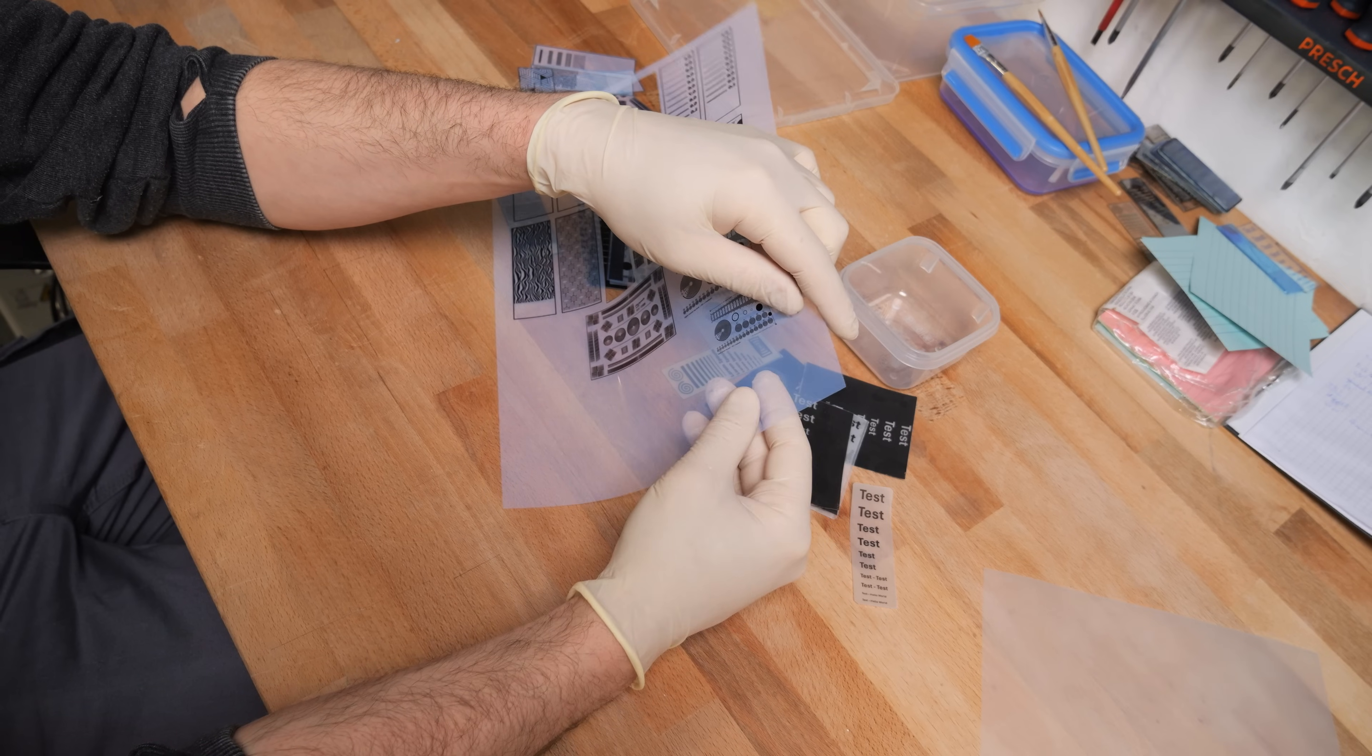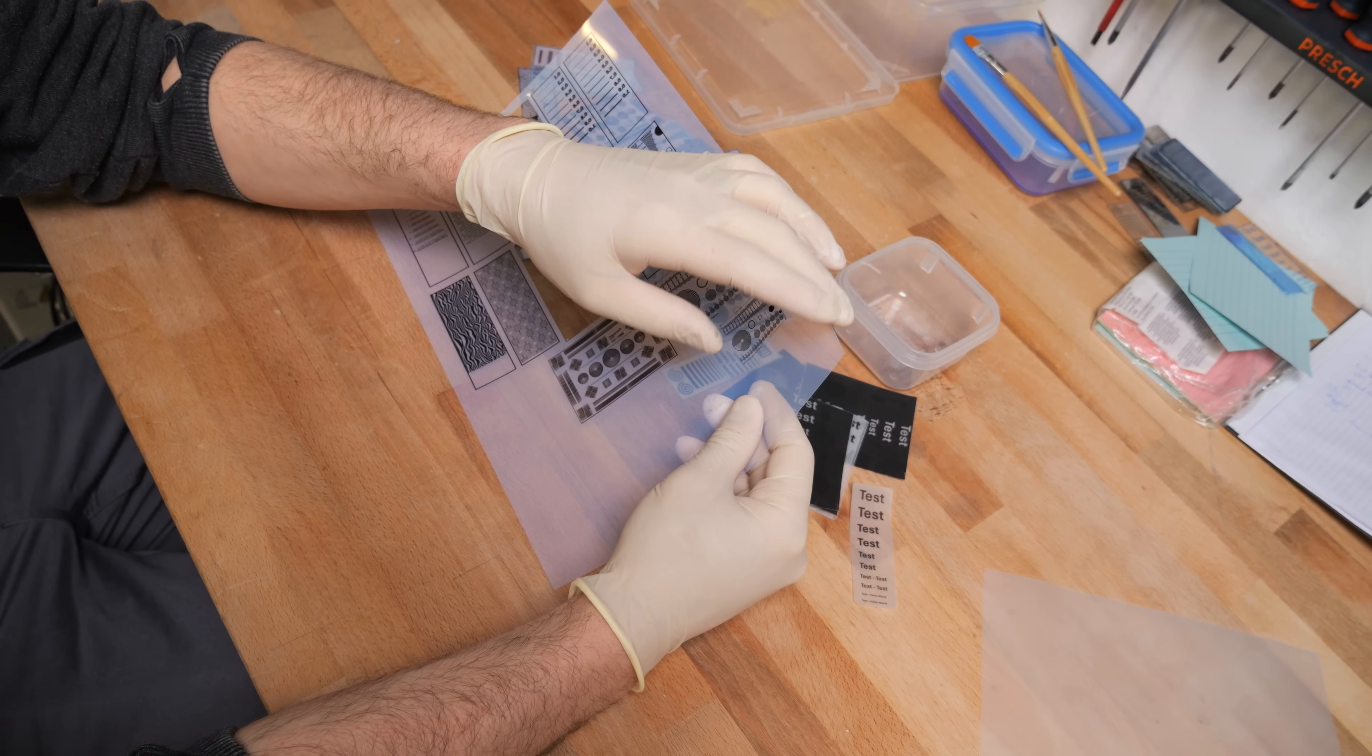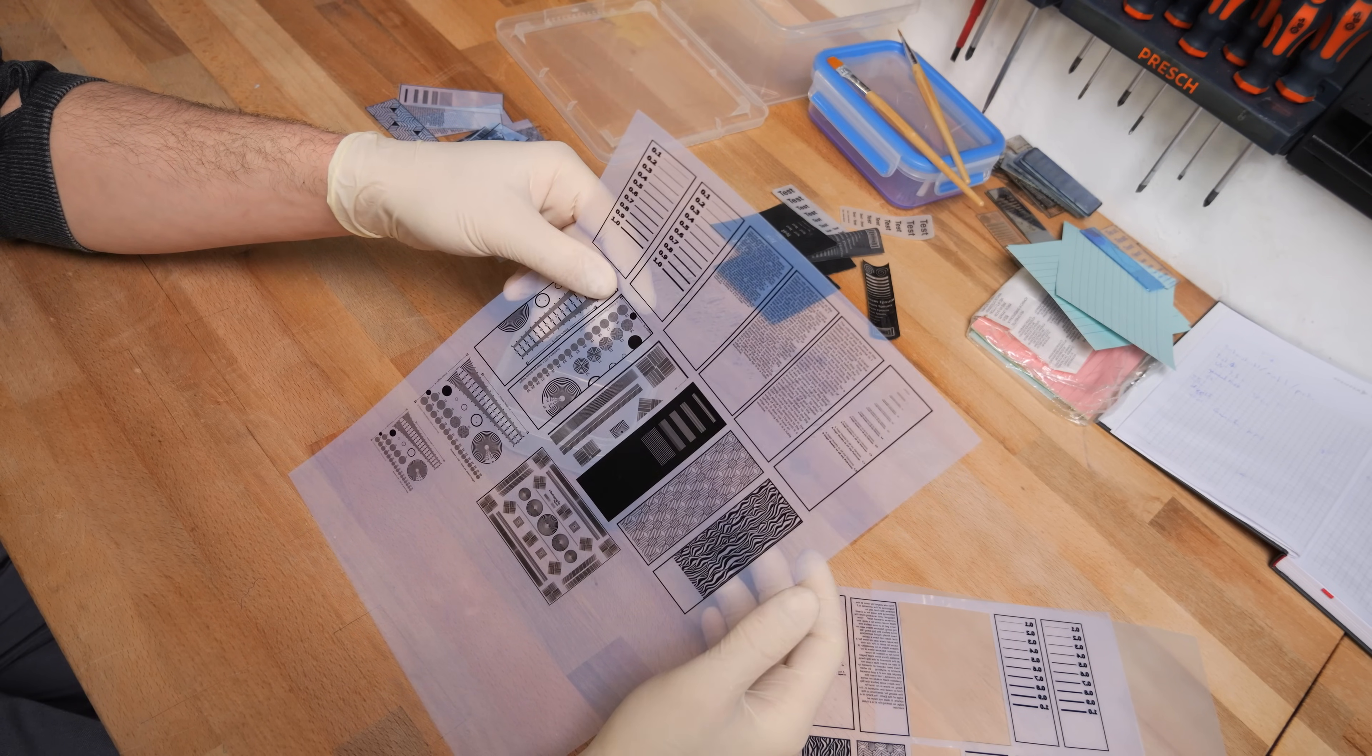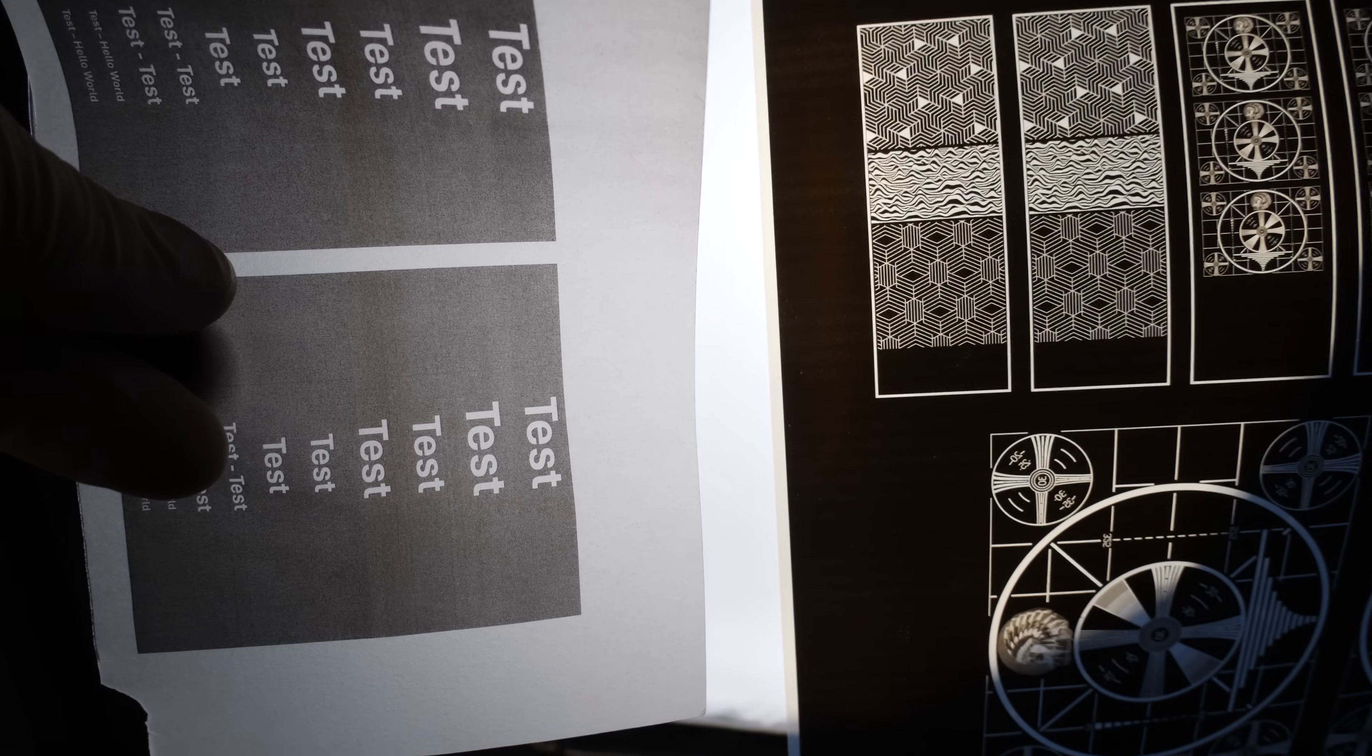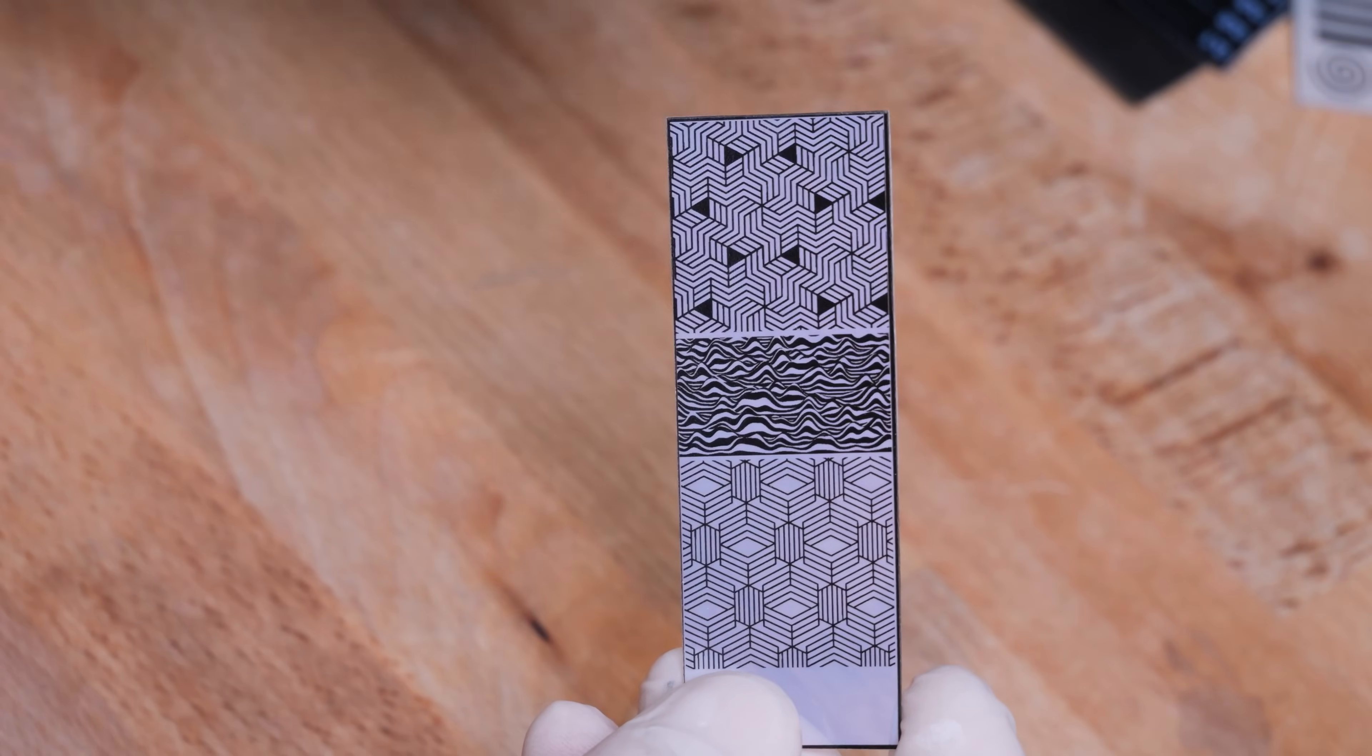I then remembered watching a video from Applied Science about electrochemical machining and to create his masks he was using this screen printing paper. This screen printing paper has an emulsion on one side which I can dissolve using IPA. This special coating enables it to take up a lot more ink than it would normally be able to. It's still not a perfect black but if you compare them to the normal transparent paper against the light you can see the huge difference. So I created all my masks with this screen printing paper.